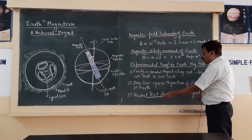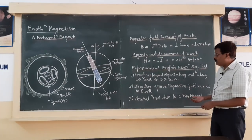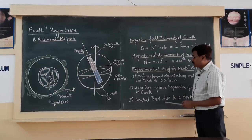The third proof is the location of the neutral point due to a bar magnet. Whenever you draw the magnetic lines of force, there is a location of the neutral point.